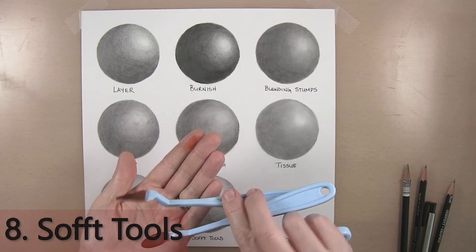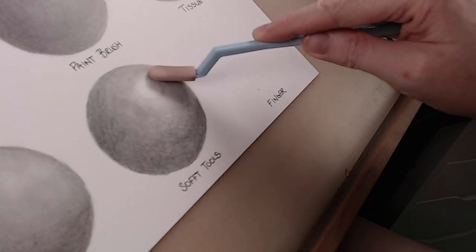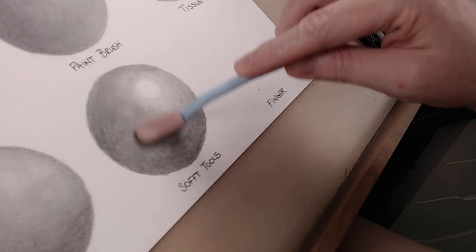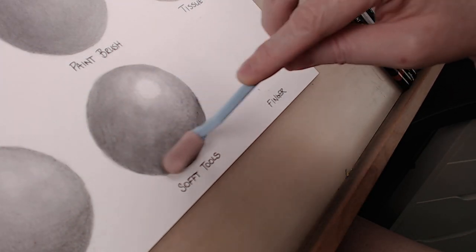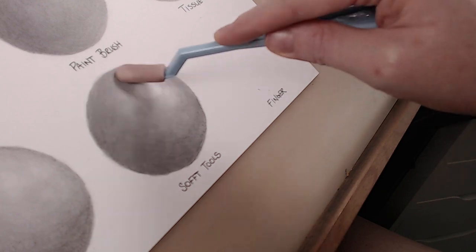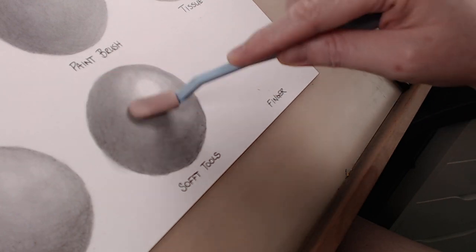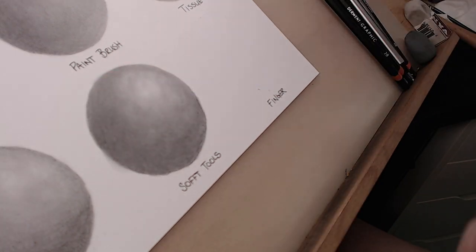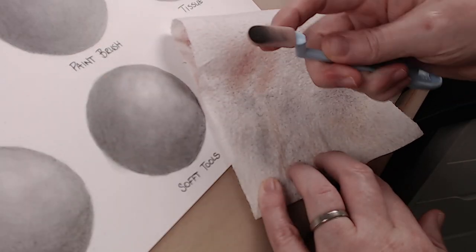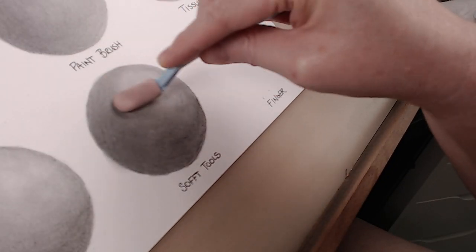Method eight is using soft tools. These tools come in many shapes and are typically used for pan pastels. You can layer your pencils as usual and blend out using these tools in a circular or single directional motion. I love using these tools with my graphite powder especially as I can get a lot of coverage very quickly.